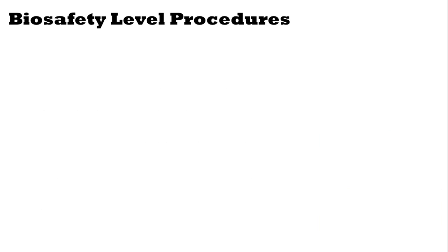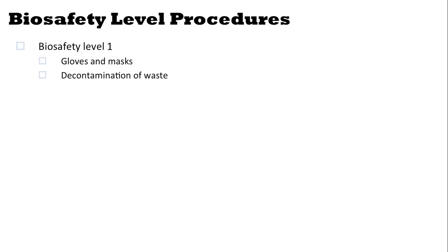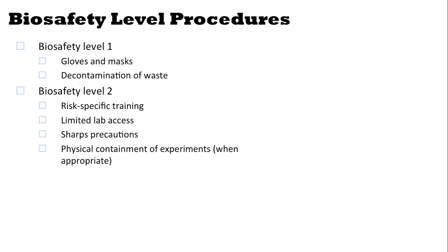For each risk group, there's a set of biosafety level procedures associated with working safely with those agents. Biosafety level 1, for working with risk group 1 agents, involves wearing gloves and masks, and standard decontamination of waste. Biosafety level 2 procedures add risk-specific training, limiting access to the lab, sharps precautions, and the physical containment of experiments when appropriate.